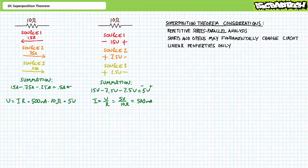Mesh and nodal analysis necessitate special math skills with very little carryover value outside these limited circumstances. The reason I'm such a big fan of superposition is that it yields reliable results using skills you should already feel comfortable with applying — notably traditional series-parallel circuit analysis. Why learn special skills like mesh or nodal analysis when the skills you already have yield the same results?